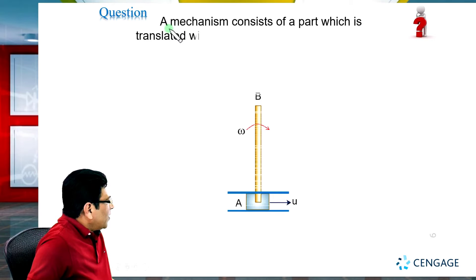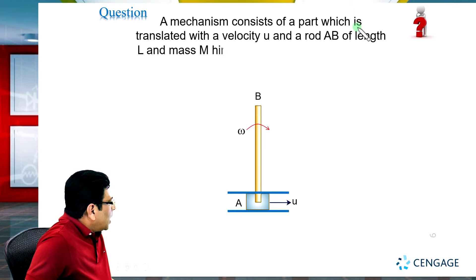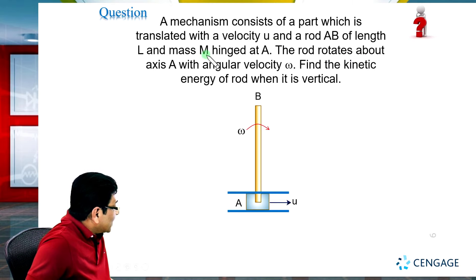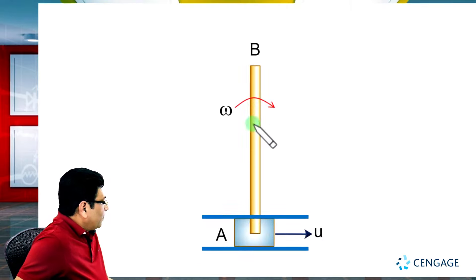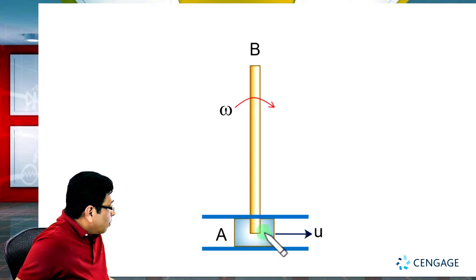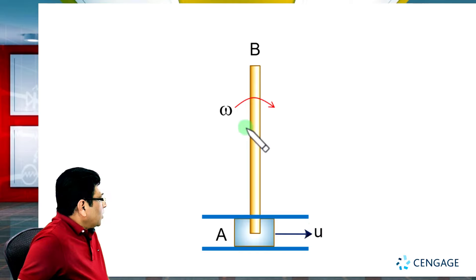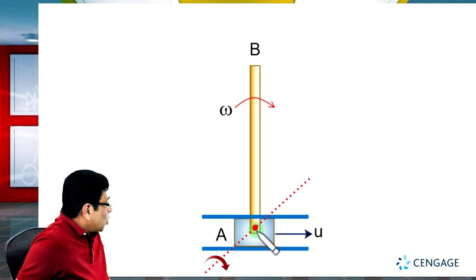In this illustration, we are given a mechanism consisting of a part which is translated with velocity u and rod AB of length capital L, mass capital M. You can observe here, this mechanism consists of a block which is restricted to move in the horizontal direction with velocity u. Length of the rod is capital L, mass is capital M, and the rod is hinged about A, about the lowest point.